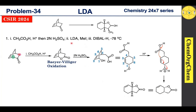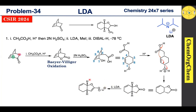The next reaction condition involves LDA. LDA is a non-nucleophilic, sterically hindered strong base that readily abstracts a proton from the less hindered, more acidic position. We have already discussed LDA and its applications in two parts — if you missed those videos, you can find the link in the description box. Here, this position is the acidic position, so LDA abstracts one of its protons to produce the corresponding enolate ion.